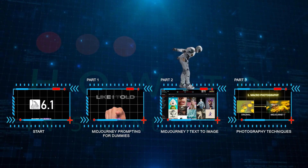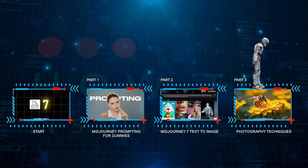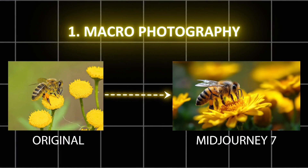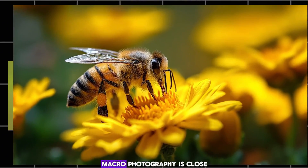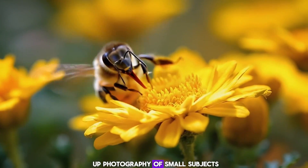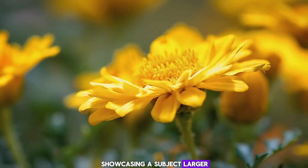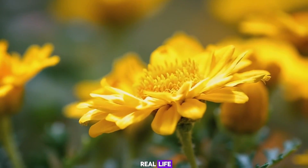Part 3: Photography Techniques. Number 1 — Macro Photography. Macro photography is close-up photography of small subjects, showcasing a subject larger than it is in real life.